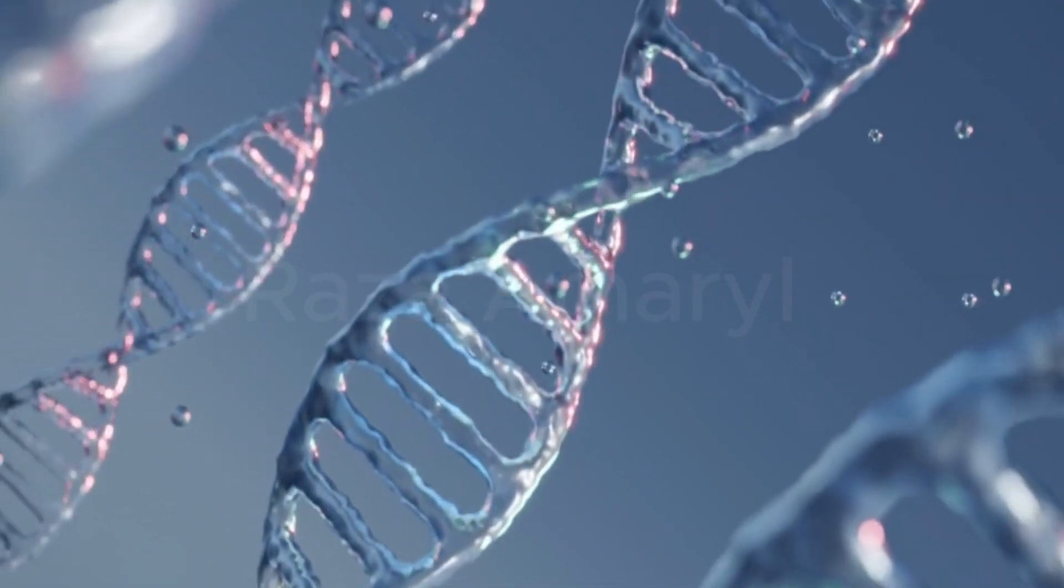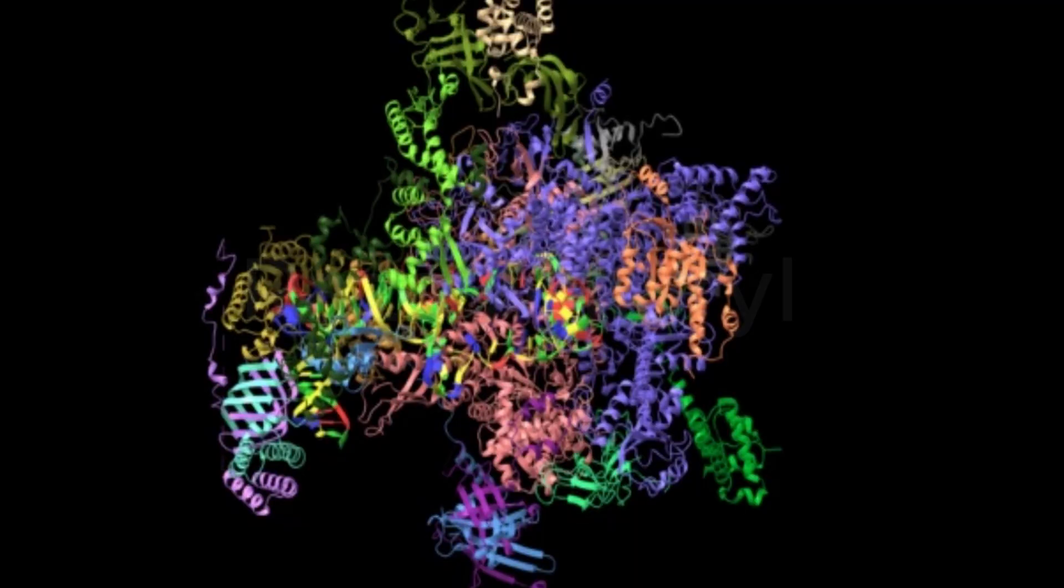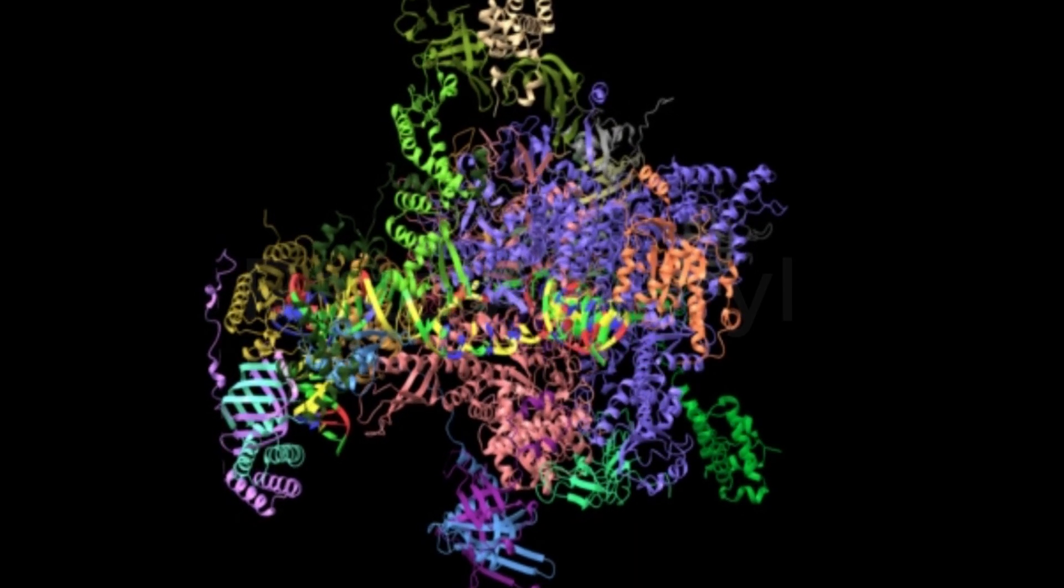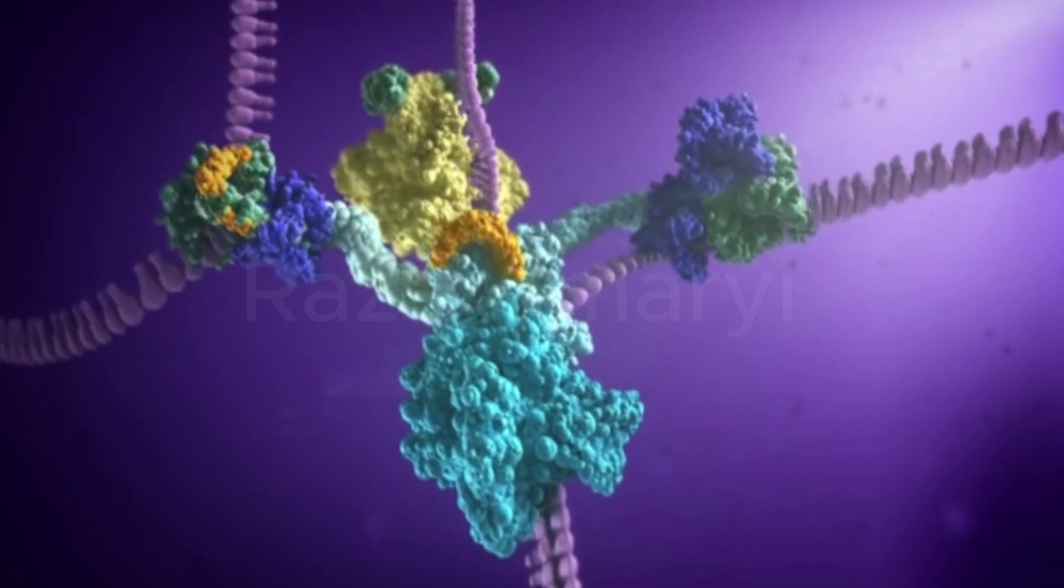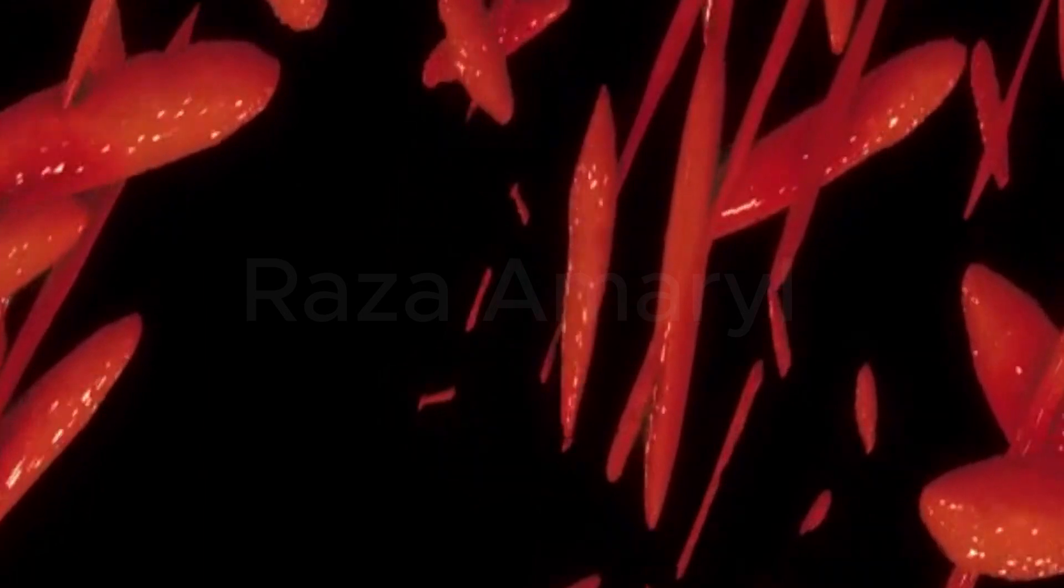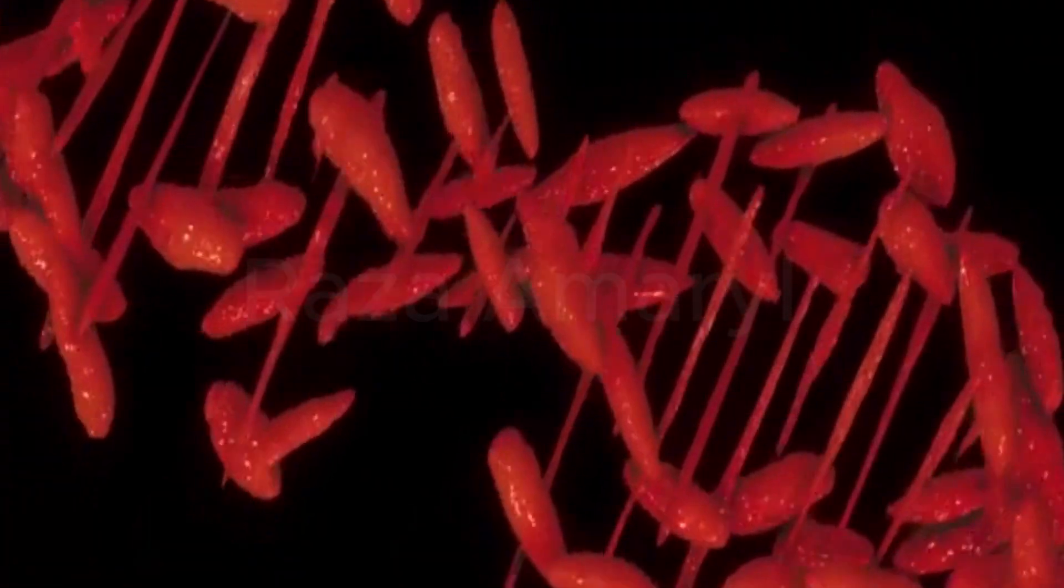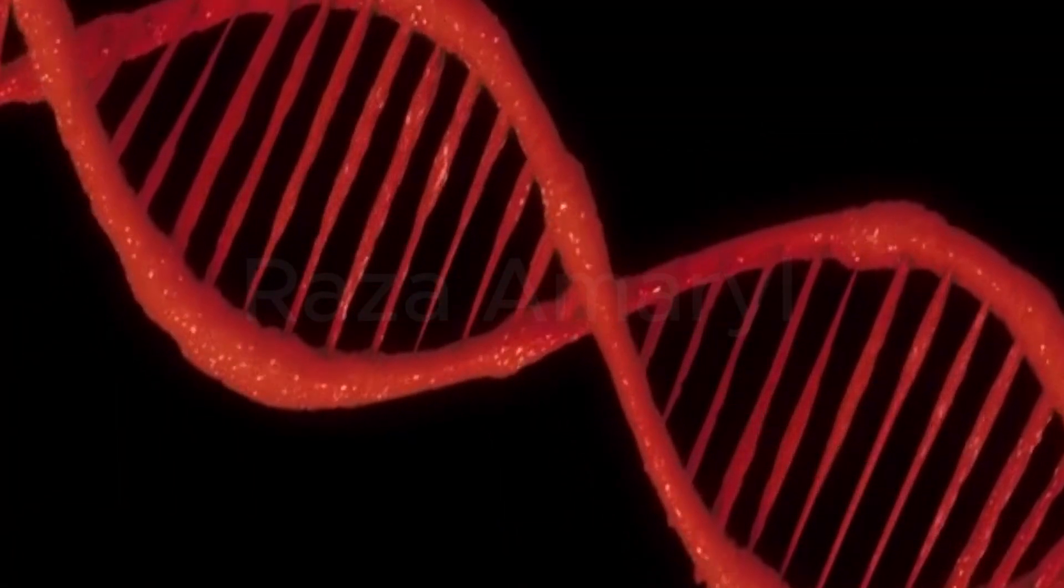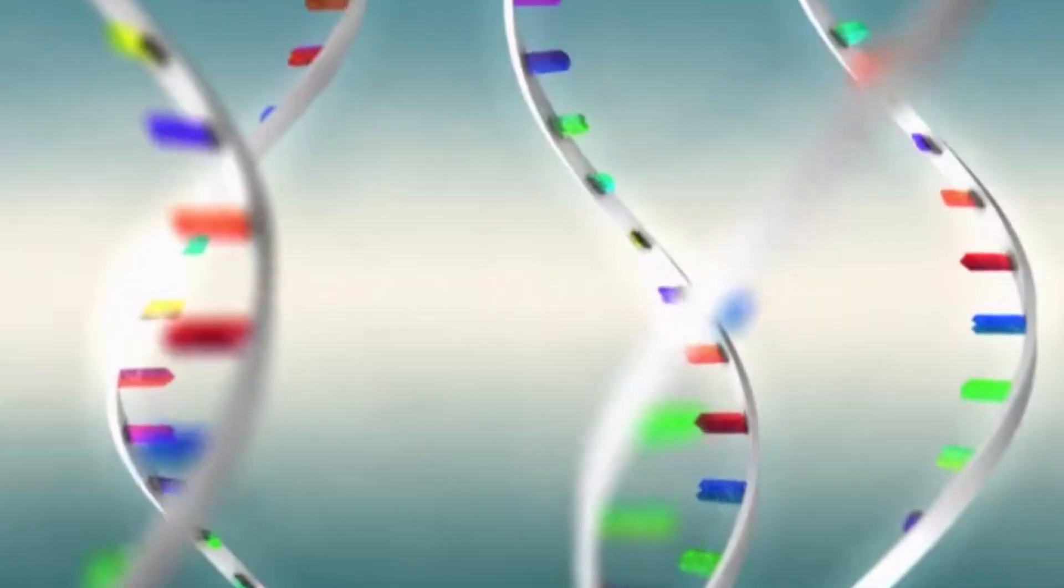1. Transcription. Transcription occurs in the nucleus of the cell. During transcription, the DNA double helix unwinds, and an enzyme called RNA polymerase reads one strand of the DNA and synthesizes a complementary RNA molecule, known as messenger RNA, mRNA.